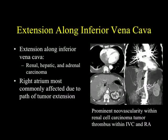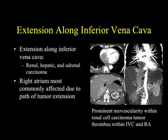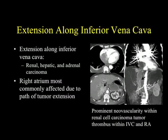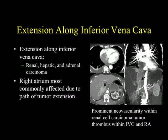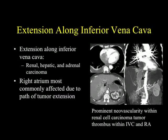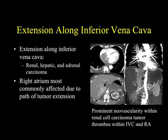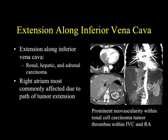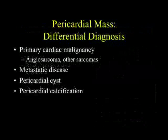We also speak about extension of tumor up the IVC into the patient's right atrium. We talk about renal carcinoma, hepatoma, and adrenal carcinoma — those are the big three — and the right atrium is typically involved. Particularly with hypervascular renal cell carcinomas, the hypervascular thrombus extending into the right atrium is very nicely defined on CT.